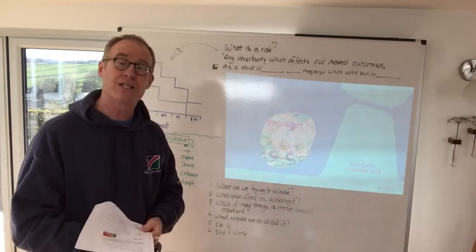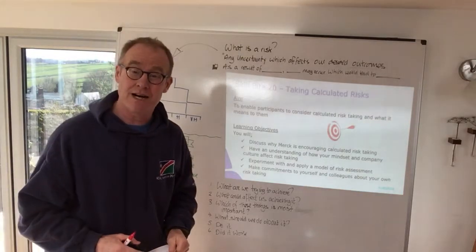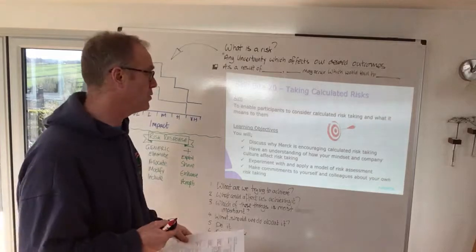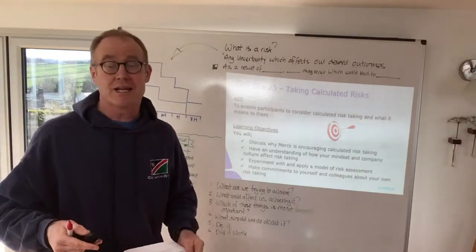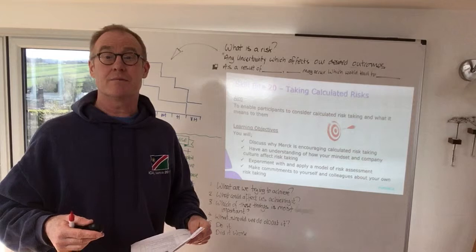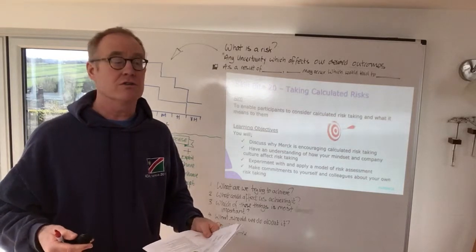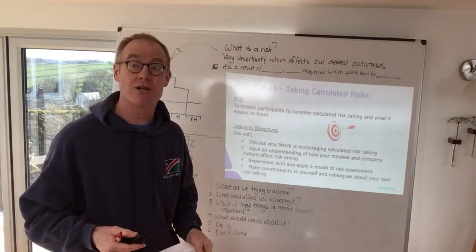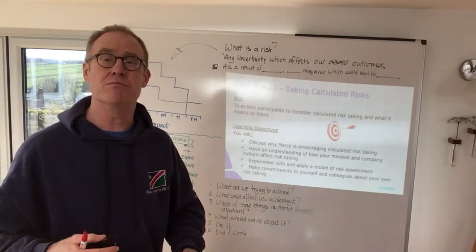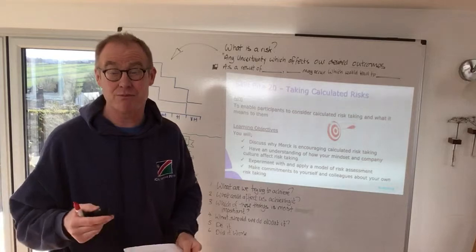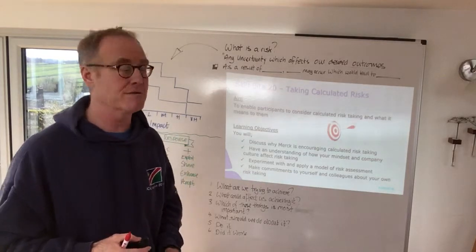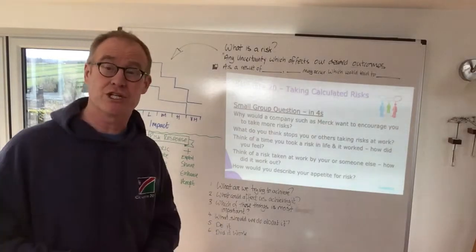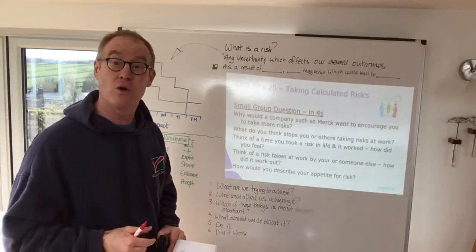As always, start with aims and objectives — take the group through them just as you would ordinarily do. Principally, what we're trying to do is get participants to feel more confident, braver, and bolder in taking risks. We want to encourage them to look out, evaluate, and then take risks, so they're moving more dynamically. That's principally what we're trying to achieve.